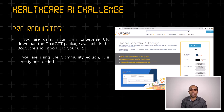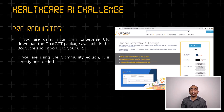Let's look at the pre-requisites. If you are using an enterprise version of the automation success platform, you can download the ChatGPT package from the bot store and import it to your control room. If you are using community edition, it is already pre-loaded. We have also added documentation on how to use the ChatGPT package, along with a video on how to set it up and use it. I'll leave the links to both of these in the description.